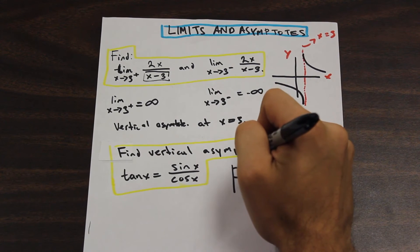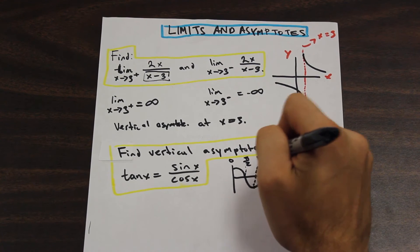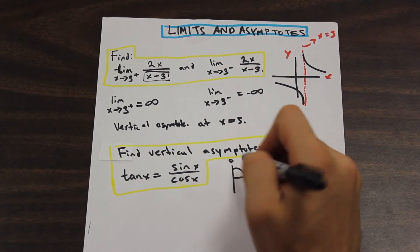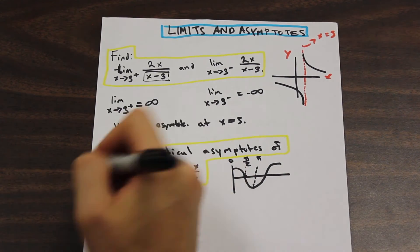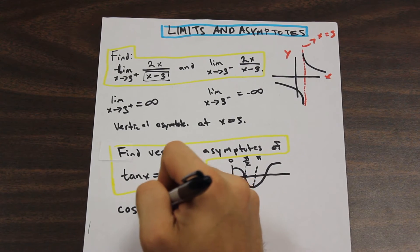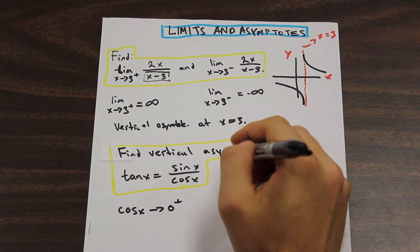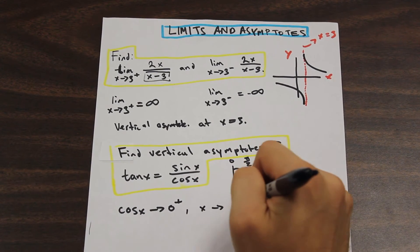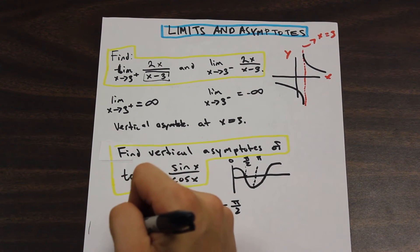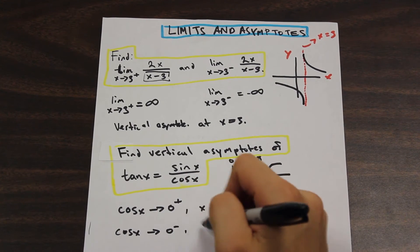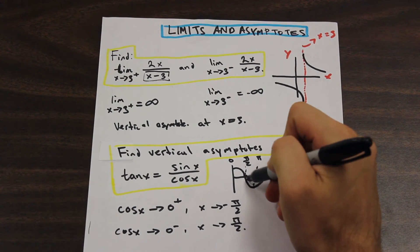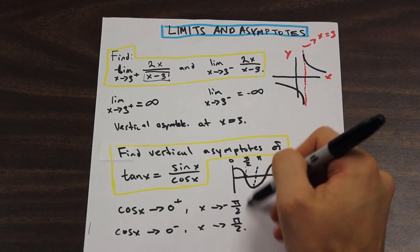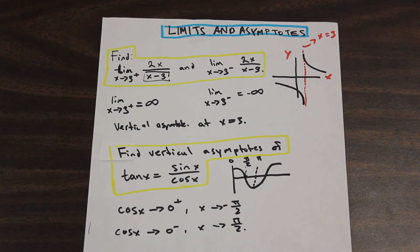I like to draw a little graph of cos(x) to help. Looking at the graph, cos(x) becomes 0 at pi over 2, so that is a potential vertical asymptote when x equals pi over 2. We can check this: when cos(x) approaches 0 from the right, x is approaching negative pi over 2, and when cos(x) approaches 0 from the left, x equals pi over 2. We can plug these values into tan and verify that we have a vertical asymptote.